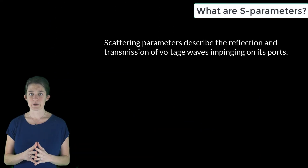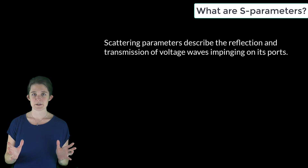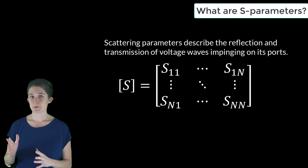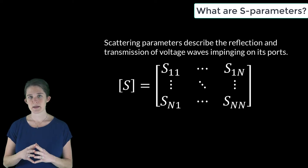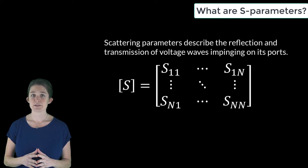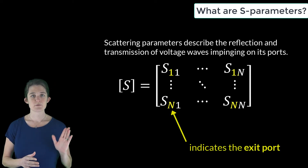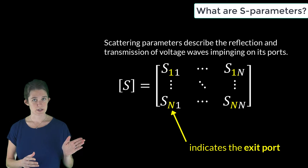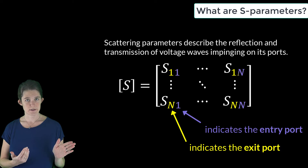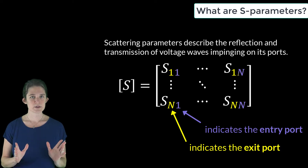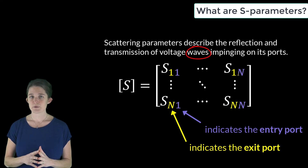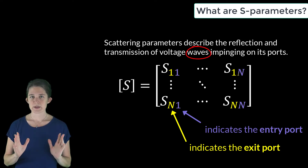The scattering parameters of a network describe the reflection and transmission of voltage waves impinging upon its ports. The scattering parameters of an n-port network are stated as an n by n matrix with n-squared elements. Each element of the S-matrix has two subscripts: the first indicates the port at which energy exits the network, and the second indicates the port at which that energy entered. Importantly, scattering parameters are defined in terms of voltage waves, not total port voltages.